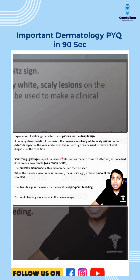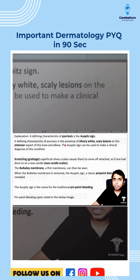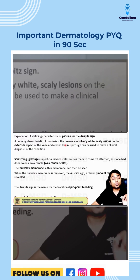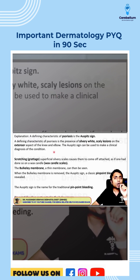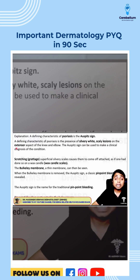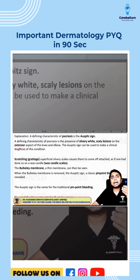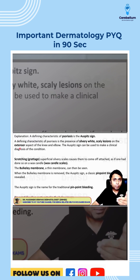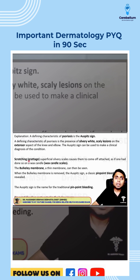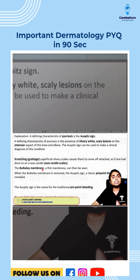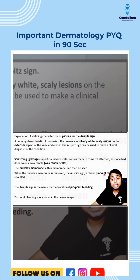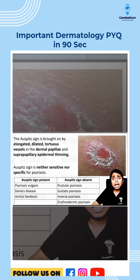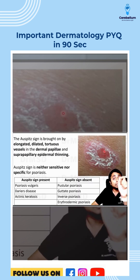Very good. Remember, psoriasis is a papulosquamous disorder in which we can see silvery white scaly lesions predominantly over the extensor aspect. If we take a glass slide and scrape off the scales, we can see the Bulkiest membrane. If we remove this membrane, we can see pinpoint bleeding spots, as you are able to see in this image.